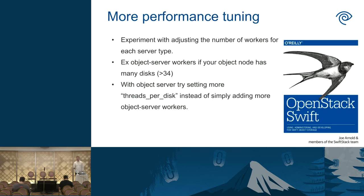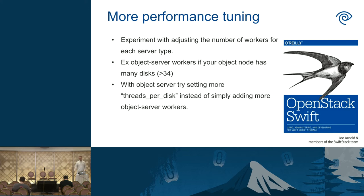You can also performance tune at the Swift level. For example, on an object node with about 34 disks, I got a significant boost going from 8 object workers to 16, and you can tune further by changing the threads-per-disk value even higher. I learned this from the OpenStack Swift book by Joe Arnold and members of the SwiftStack team — if you're going to run a production Swift cluster, you should have read that entire book thoroughly. The important thing is that in those class declarations in your profile manifests, if you look into those classes, you can tune almost any of these Swift settings to match your environment.